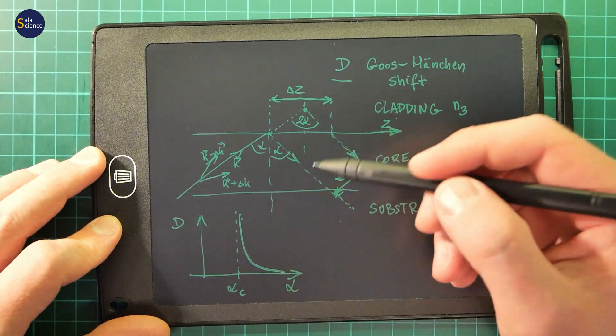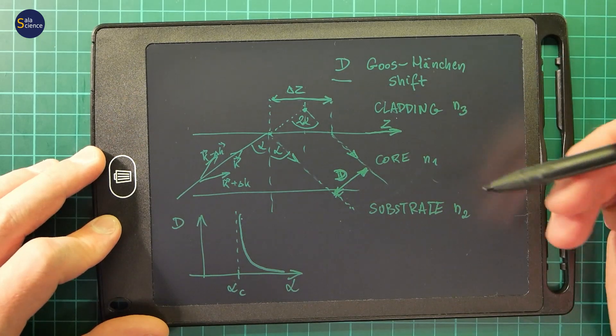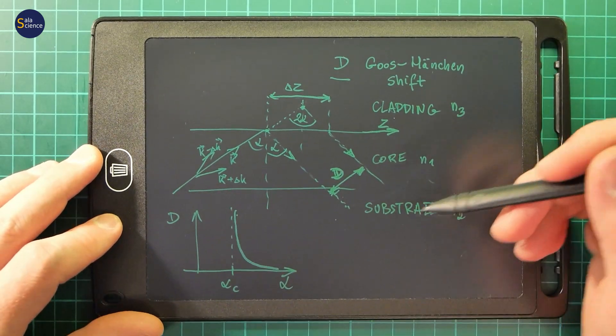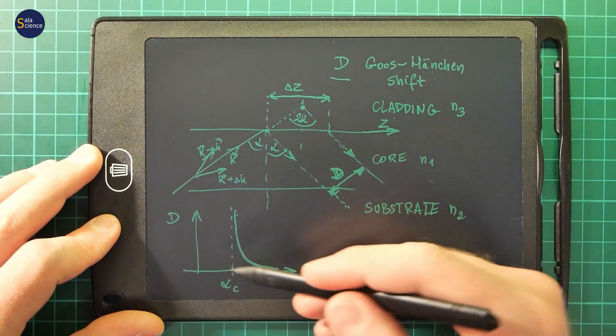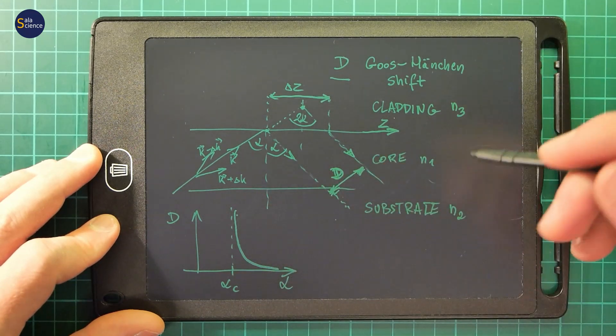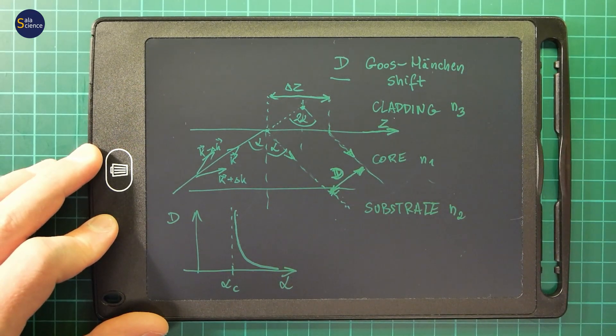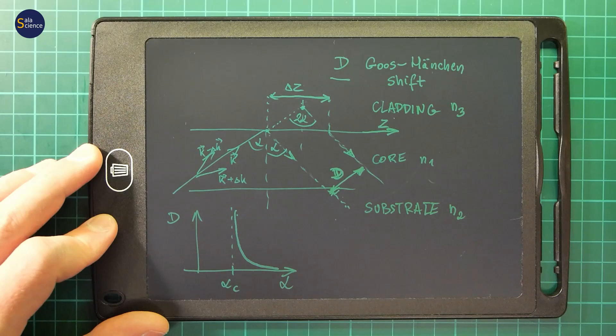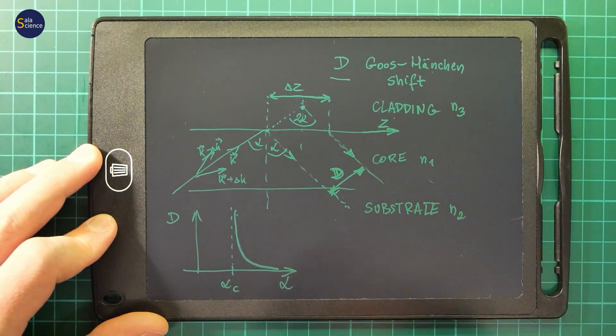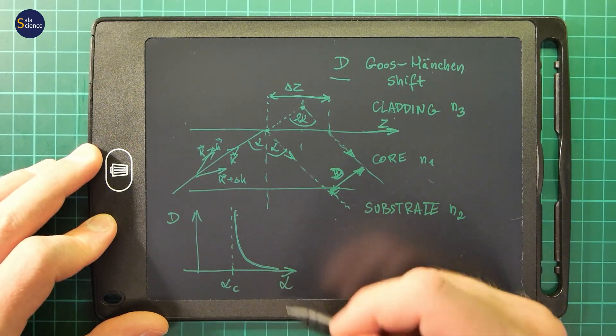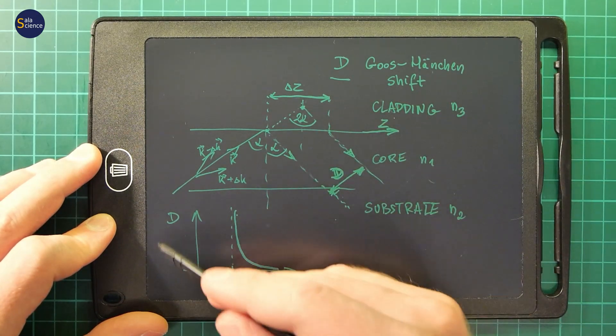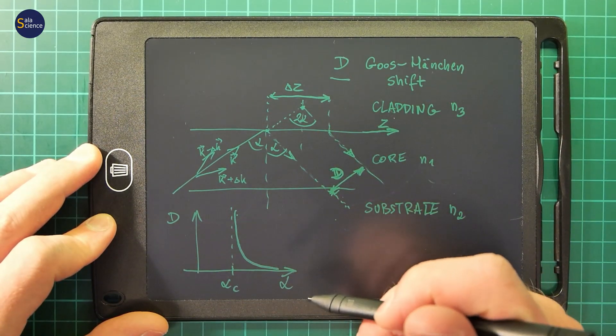This Goos-Hänchen shift increases while we are approaching the critical angle of incidence. In theory, here is an asymptote. In real life, the Goos-Hänchen shift at the critical angle is of the order of tens of micrometers. The larger the angle of incidence, the smaller the Goos-Hänchen shift.